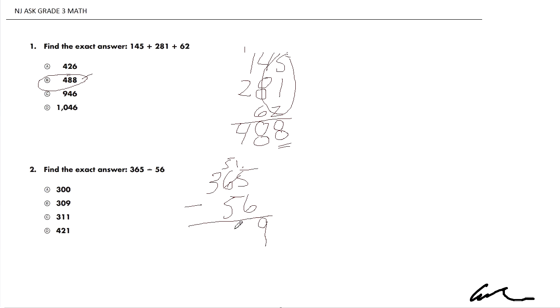5 minus 5 is 0. And 3, 3, 0, 9. We get the answer B here.